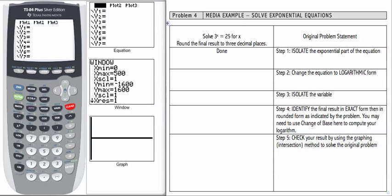In this problem, we're going to work with an algebraic process to solve exponential equations. The equation we're given is 3 to the x equals 25. Let's follow the steps on the right-hand side of the table.